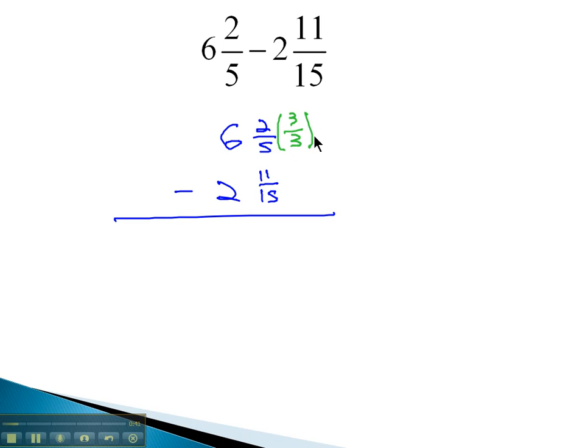Multiplying the first fraction by 3 over 3 gives us 6 fifteenths. The other one, 11 fifteenths, already has the denominator we want, and we're ready to subtract. The problem is, we can't take 11 things away from 6 things.